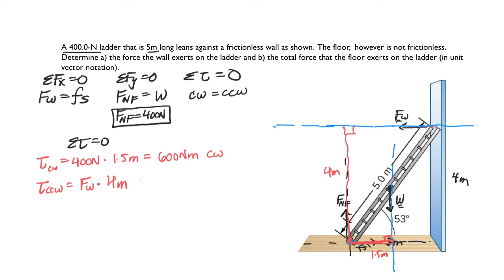So now I want to balance those two torques out. So sigma torque is zero. So 600 newton meters of clockwise torque equals 4 meters times force of the wall, which is the counterclockwise torque. And that tells me that the force of the wall is 150 newtons. Well, if the force of the wall is 150 newtons, that also tells me that the frictional force is 150 newtons. And I've figured everything out.